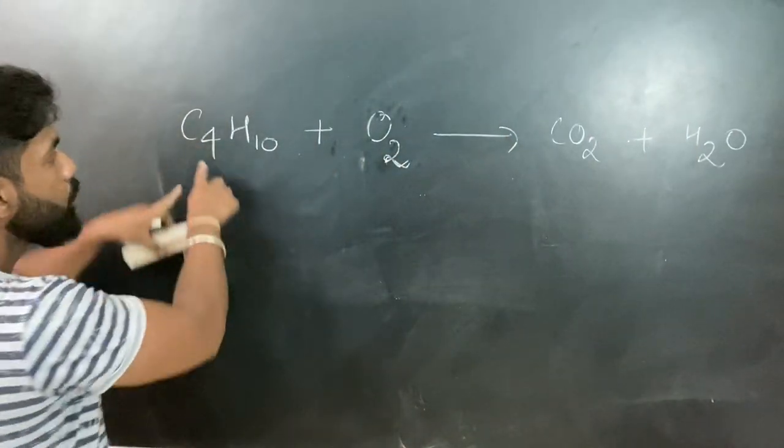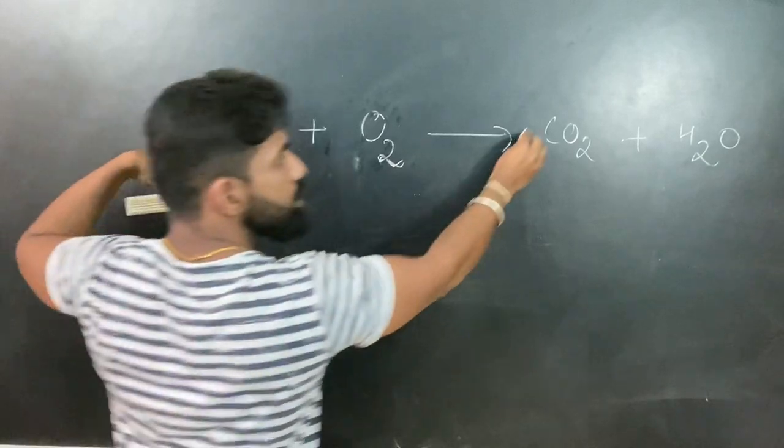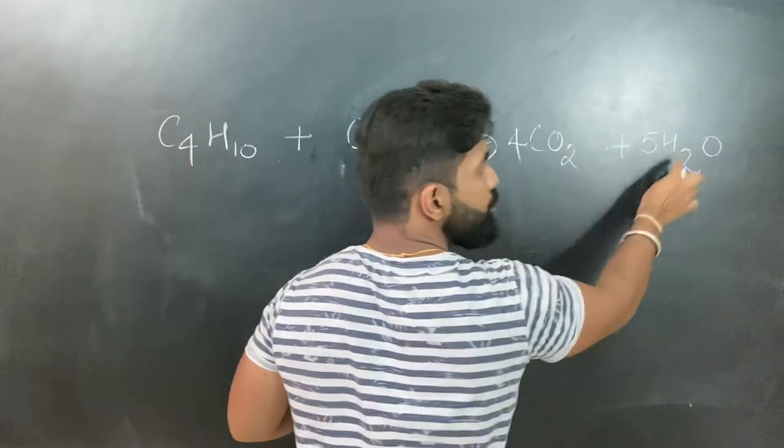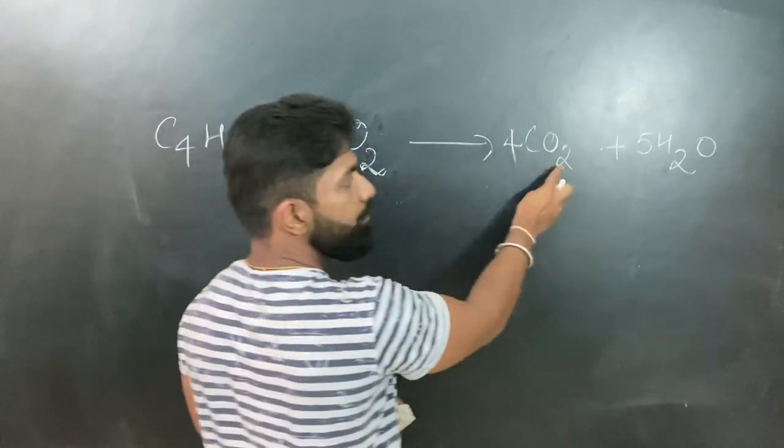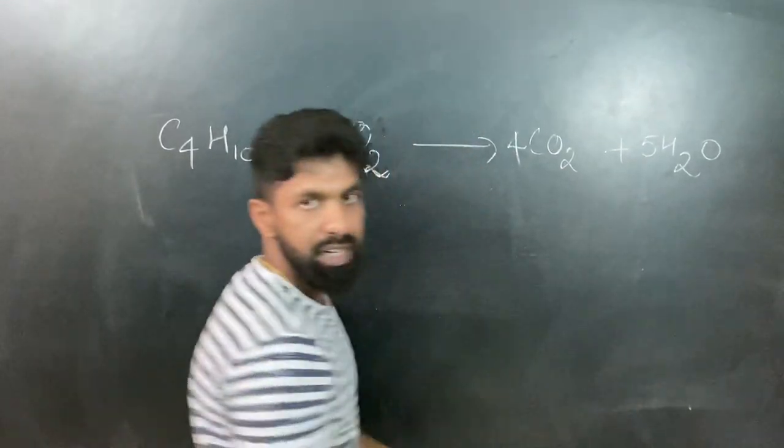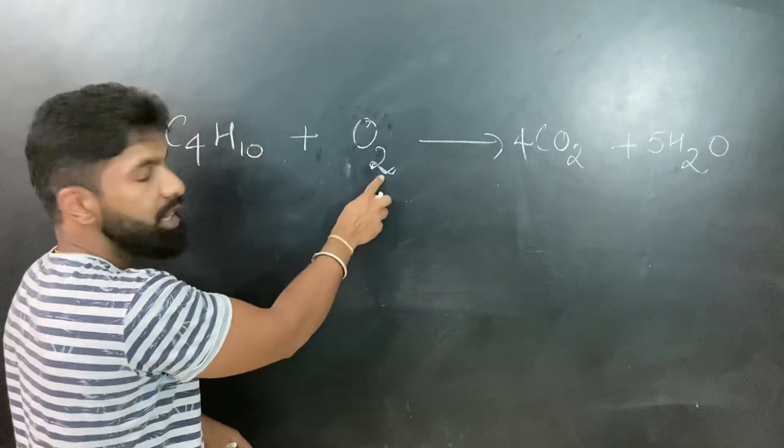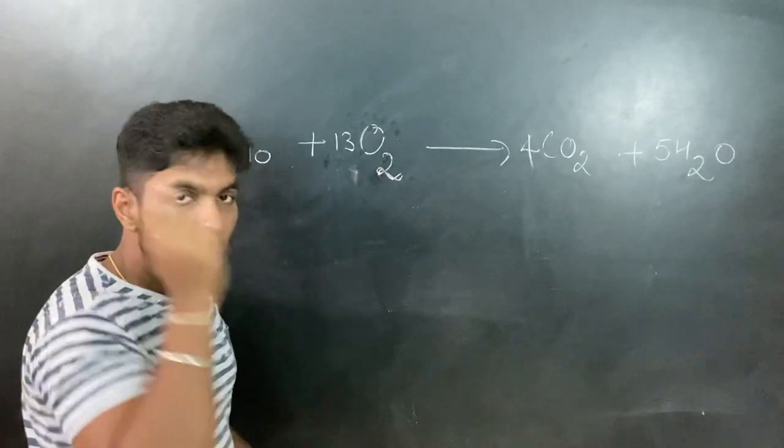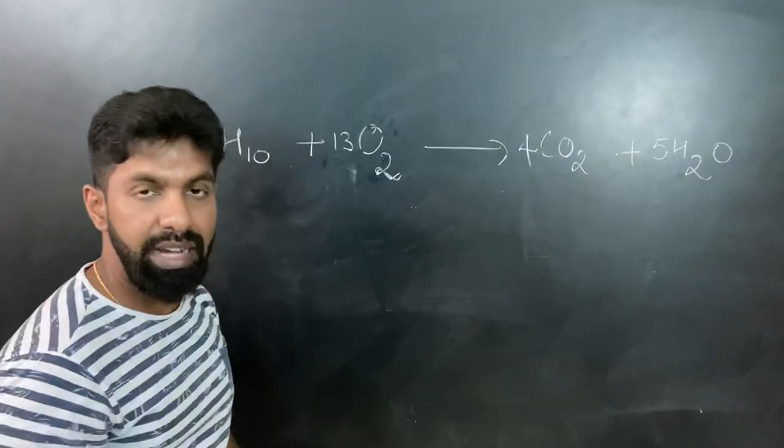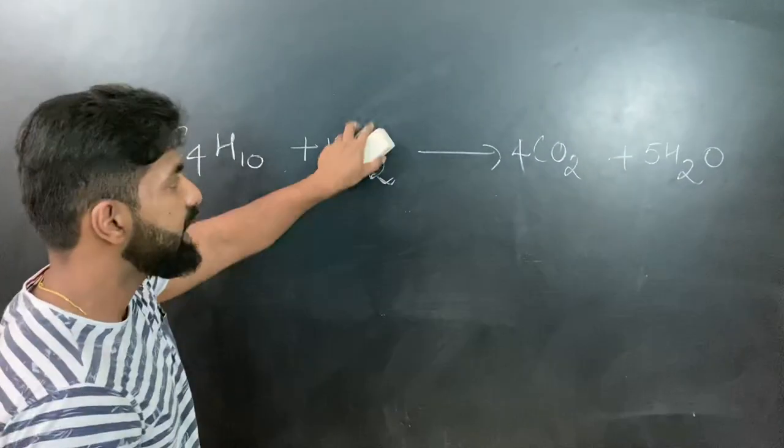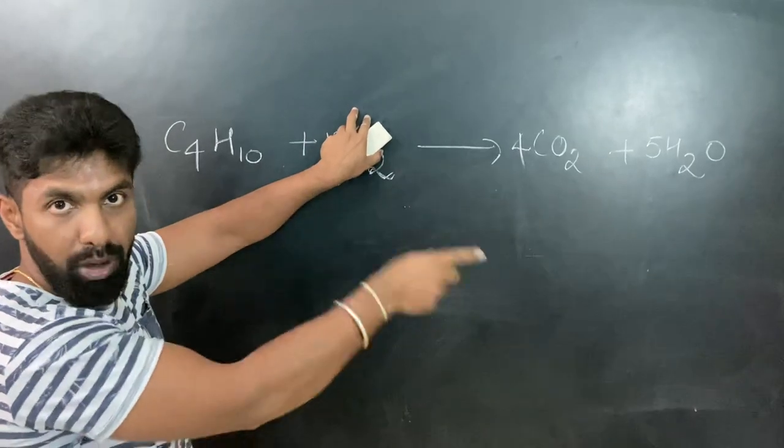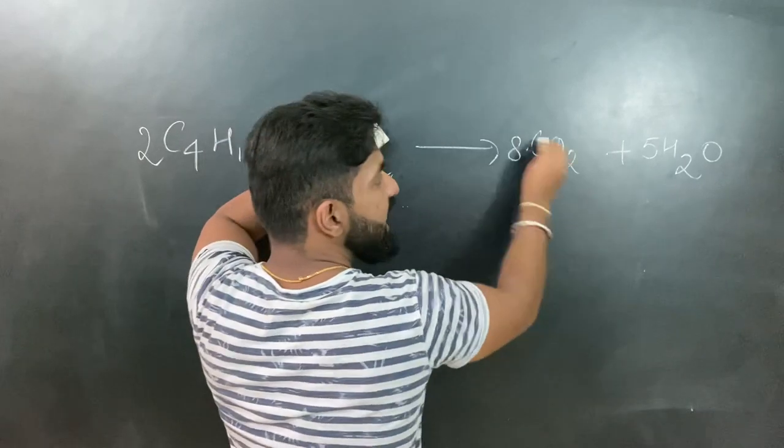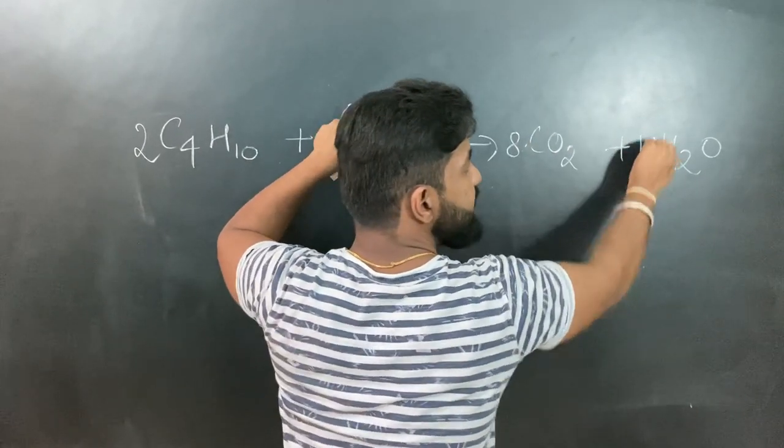Let me repeat: carbon has to get balanced first, so put a 4 here. Hydrogen has to get balanced next, so 5 times 2 is 10. Now count for oxygen: 4 times 2 is 8 plus 5 equals 13. So what number written here multiplied by 2 gives you 13? 13 by 2. I do not write the by 2 but I keep it in my mind. Now what do I do with the by 2? I multiply all the other compounds or elements. So 2 here - 2 into 4 becomes 8, and 5 into 2 becomes 10. The equation has got balanced.